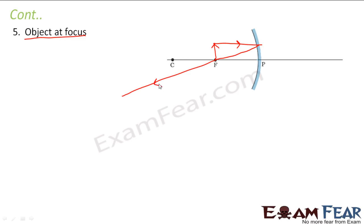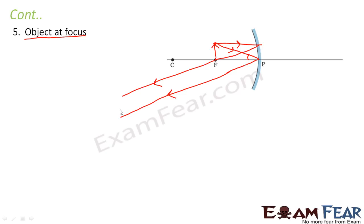Another ray of light which approaches the pole obliquely will after reflection go obliquely. So in this case, these two rays did not meet anywhere after reflection. This is one reflected ray and this is another reflected ray, but these two rays did not meet. If two rays are going parallel to each other and going far away, we are not sure where they will meet.